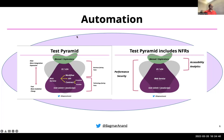Along with regular tests that check functionality and implementation details, you would also have various different types of NFRs required to get a better sense of quality in terms of load and volume when used by real users in production. Some NFRs include performance, security, accessibility, analytics validations, and various others. All these different types of automated tests combined tell you the quality of your product.